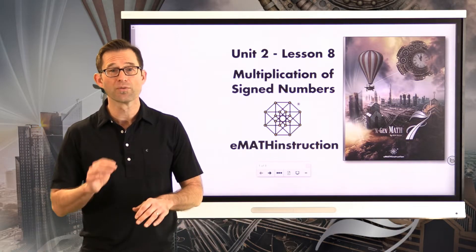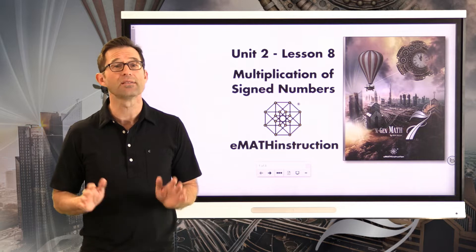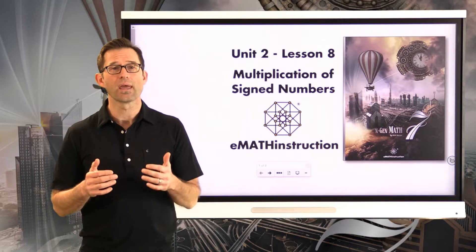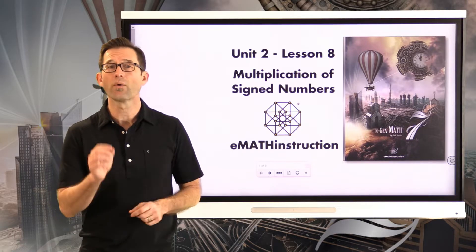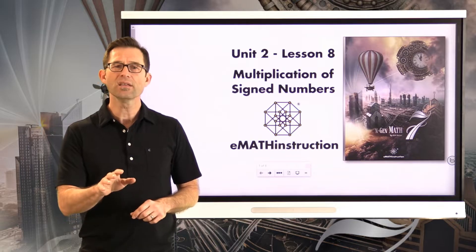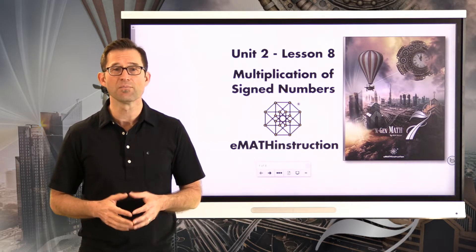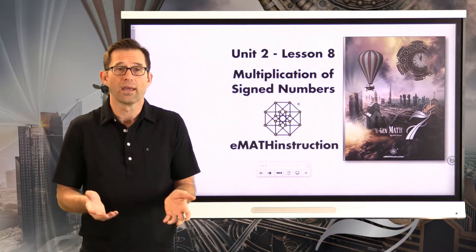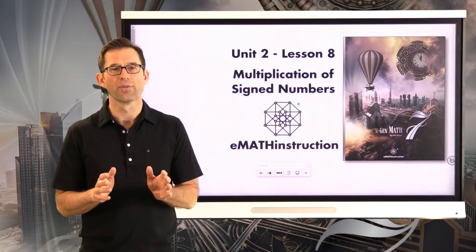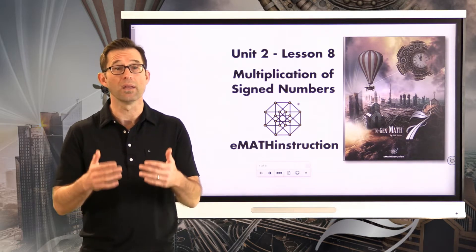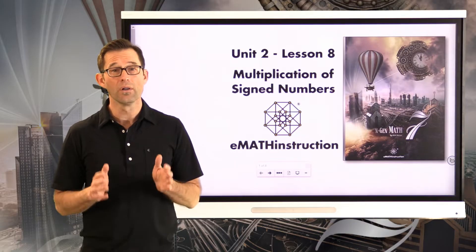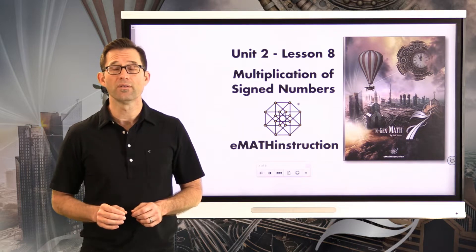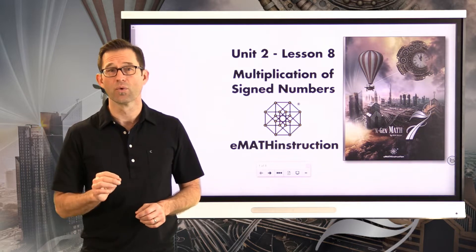The cool thing about multiplying positives and negatives is that at the end of the day it's actually pretty easy, and there are rules that you have to use. But we want you to understand where those rules come from by really understanding multiplication. It's easy enough to understand adding positives and negatives — when I add negative 3 to positive 3 they cancel out and I get zero. But multiplication is different because multiplication really means repeated addition. So today we're going to look at how to multiply signed numbers, why the rules work the way they do, and then apply them.